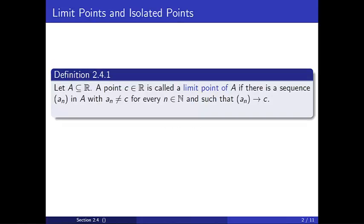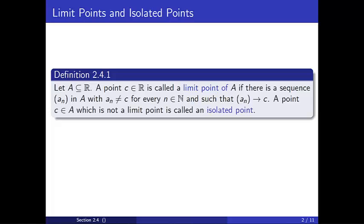Let's start with Definition 2.4.1. Let A be a subset of the real numbers. A real number c is called a limit point of A if there is a sequence a_n in A with a_n not equal to c for every natural number n, and such that the sequence a_n converges to c. A point c in A which is not a limit point is called an isolated point.